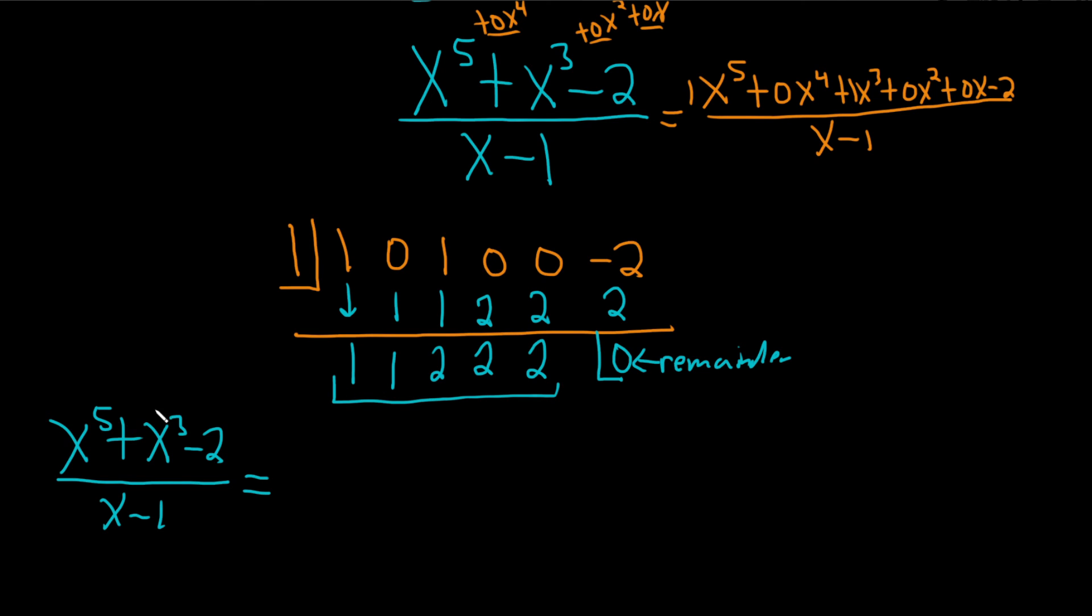And the trick is you always start at 1 less, okay? You have a 5 here, so this is going to be x to the fourth. So it's 1 times x to the fourth plus 1 times x cubed. I'm not writing the ones, plus 2 times x squared, plus 2 times x, plus 2,